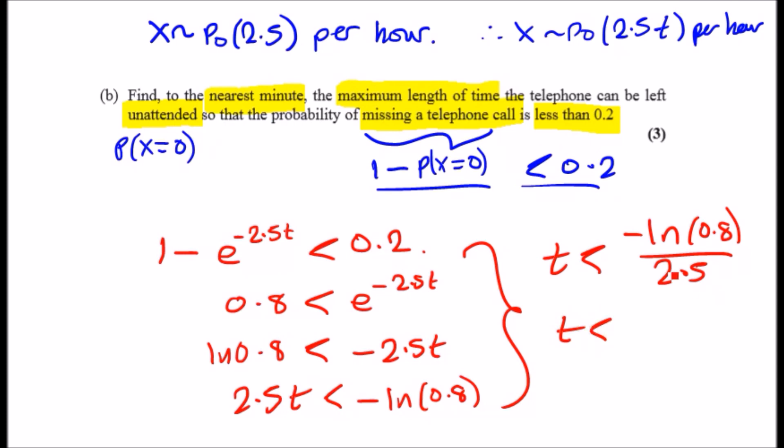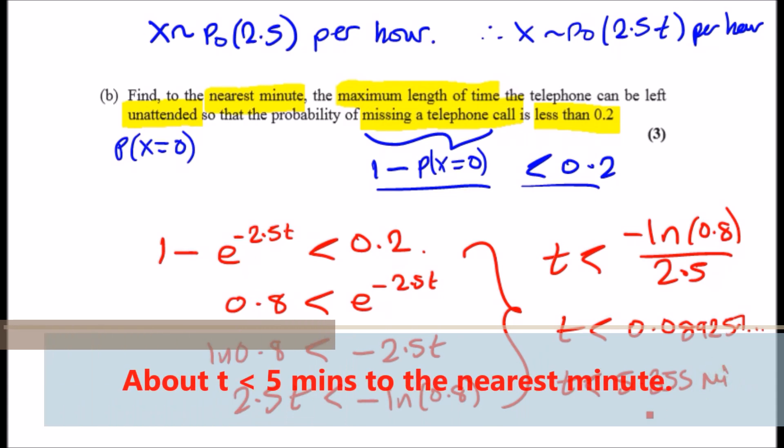Put this in the calculator and you should get 0.08957 hours. And to convert it to minutes we'll just times your result by 60, and you should get the time to be less than 5.355 minutes.